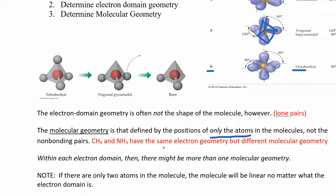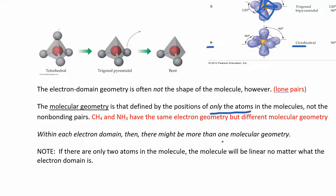For example, CH4 and NH3 have the same electron domain geometry — both are tetrahedral — but CH4 has all bonding electrons while NH3 has three bonding and one non-bonding, so they have different molecular geometries. Within each electron domain geometry there may be more than one possible molecular geometry. Also, if there are only two atoms in a molecule, it will be linear regardless of the electron domain geometry, since there is no central atom to create an angle.